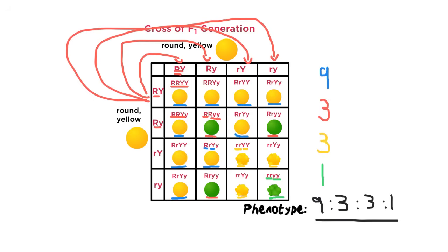It's important to note that 9:3:3:1 is the phenotype ratio, not the genotype ratio. The phenotype is the physical appearance — color, roundness, or wrinkliness. The genotype refers to the actual alleles — the Rs and Ys — and counting how many have the same letter combinations. The easiest way to track them is to circle, cross, or star a key so you can group them and write their percentages at the end.